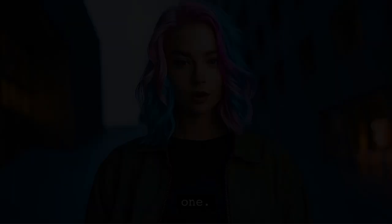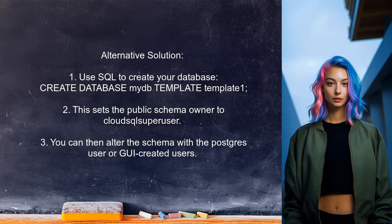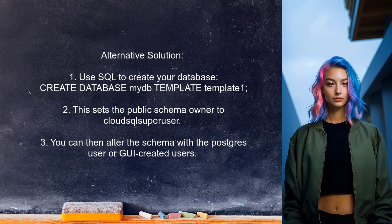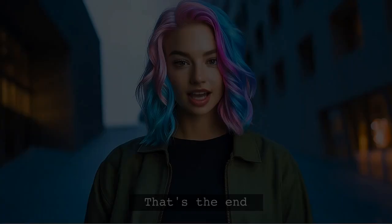An alternative approach shared by another user suggests that when you create a database using the Google Cloud Console, it defaults to using template1, which is owned by the Cloud SQL super user. To change the ownership of the public schema, you can create your database using a SQL command instead. This way, the public schema will be owned by the Cloud SQL super user, allowing you to alter it with the default Postgres user or other users created through the GUI.